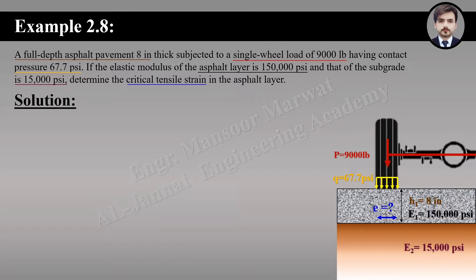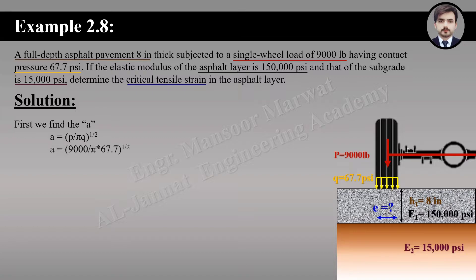Whenever solving such a question requiring a figure, the first step is to find the input parameters. In the second input parameter we need the contact area radius. We find the contact area radius using: a equals the square root of P divided by pi times q. By putting in the values we get radius a equal to 6.5 inches.